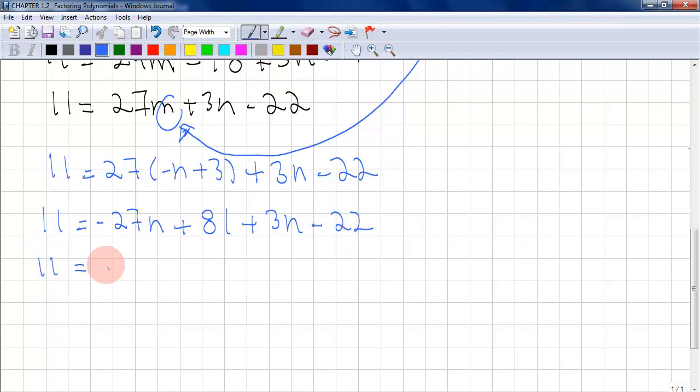11 minus 27n. Let's take a step back to make this shorter. So -27n + 3n would be -24n. And 81 minus 22 will be +59.